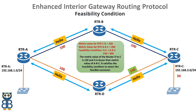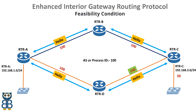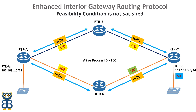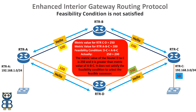Let's examine one more example to understand when Router D cannot be installed in the routing table or EIGRP topology table of Router A. Let's verify what happens when the EIGRP feasibility condition is not satisfied. The link cost of Router D to C is 250. In order to satisfy the feasibility condition for Router A, the link cost of Router D to C should be smaller than that of Router A to B to C. Since metric value 250 is greater than the metric value of Router A to B to C, Router D cannot be used as a backup router by Router A. In this design, Router D is not a feasible successor or backup router.